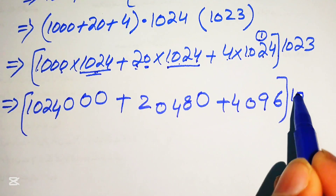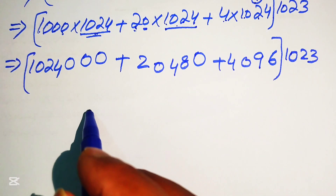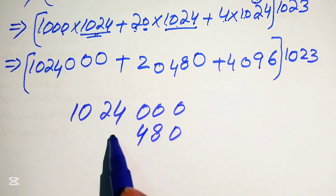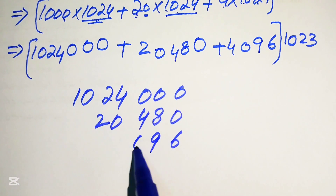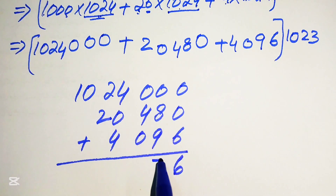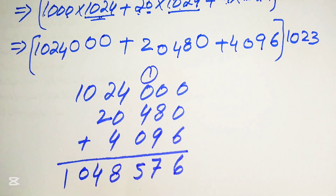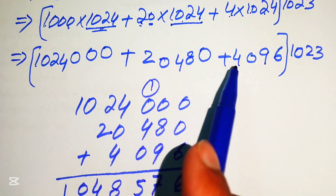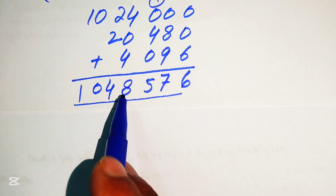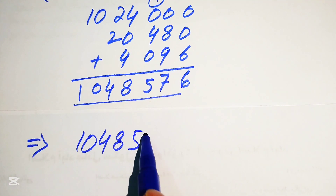We multiply this number by 1023. In the next step we sum up all these values by the standard method of addition. The first number is 1024000, the second is 20480, and the next is 4096. Adding these gives us 1048576, which is 1024 multiplied by 1023. Now we need to multiply this result by 1023.